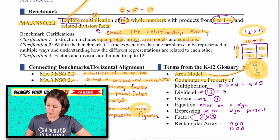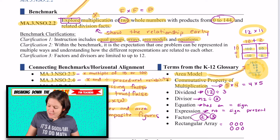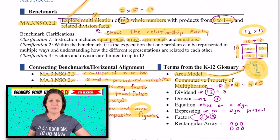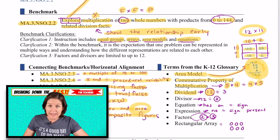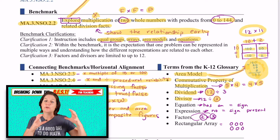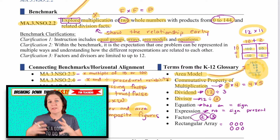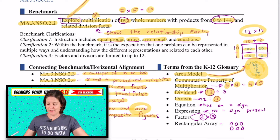You need to know about the commutative property of multiplication, which means that we flip-flop those factors — 5 times 4 is the same thing as 4 times 5. For the dividend, that is the total amount that we are dividing. The divisor is what we are dividing by — it could be the number of groups, or it could be the things in each group. We've got partitive and quotative division.